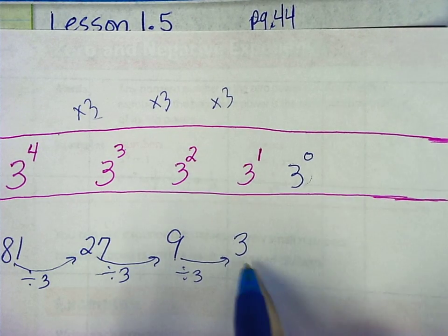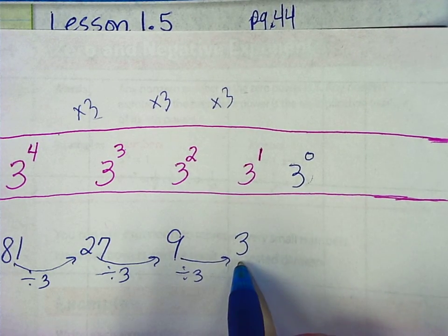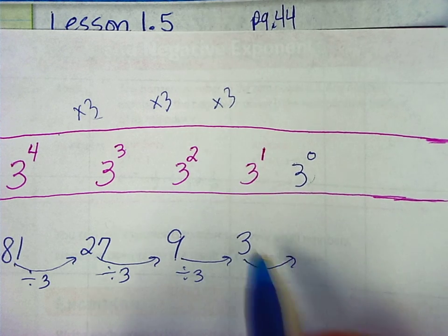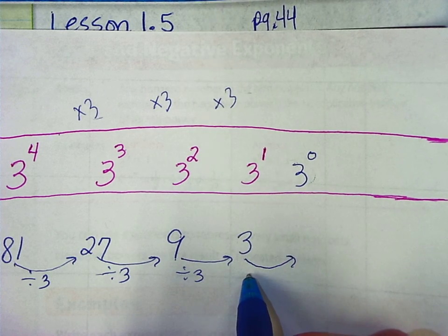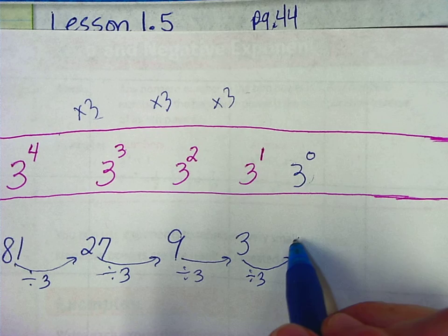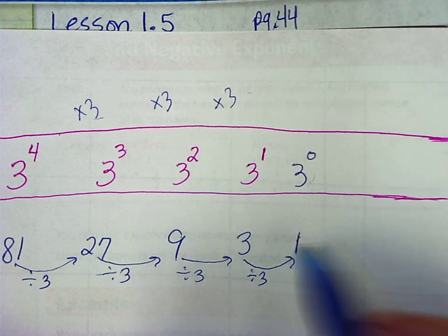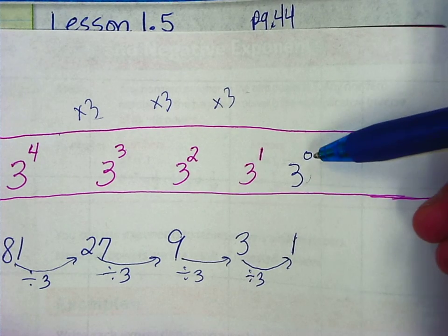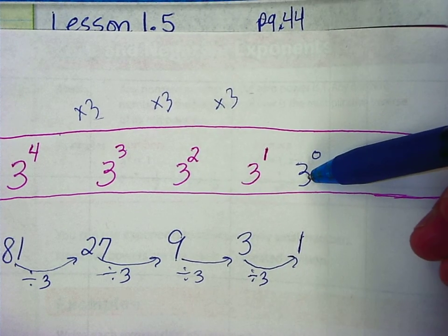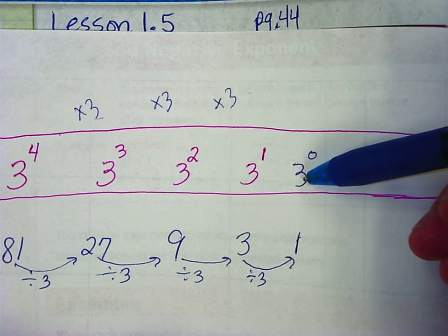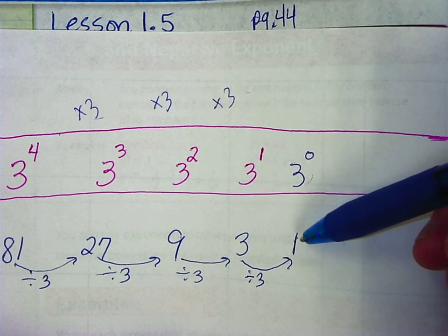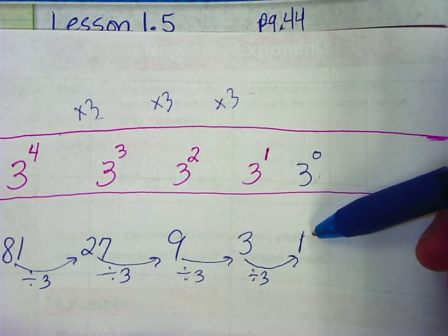Let's continue this pattern. If we take this value, 3, and divide it by 3, we get 3 divided by 3 equals 1. So that's why this works for any number — any non-zero number to the 0 power will always be 1.